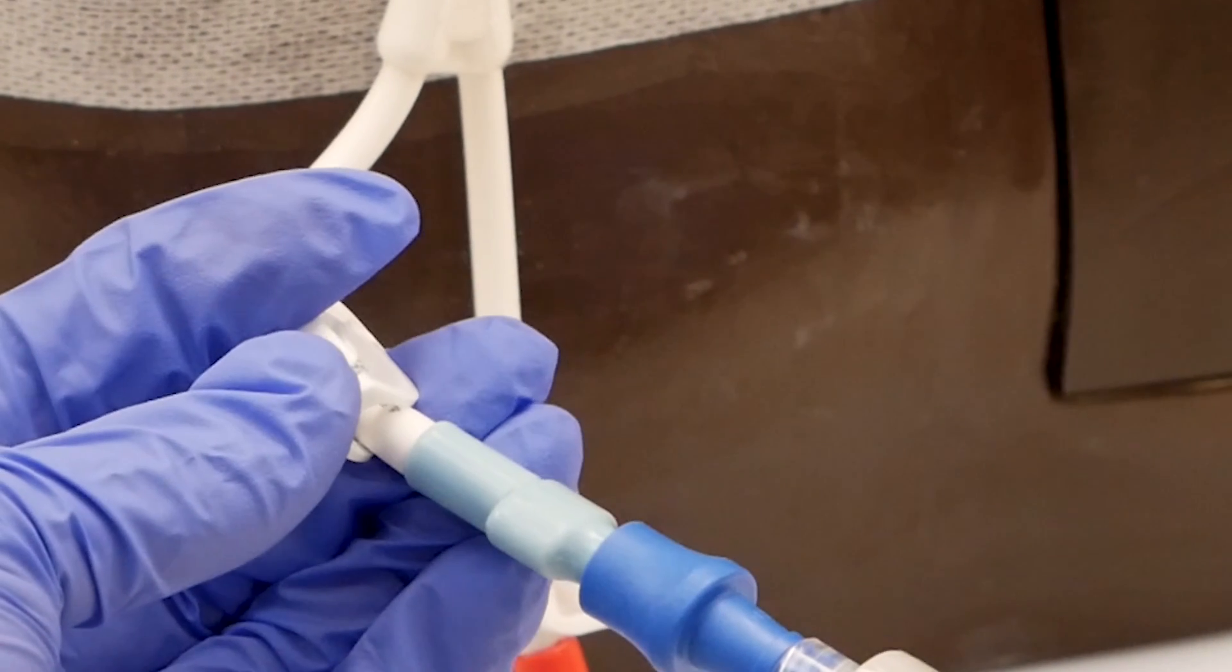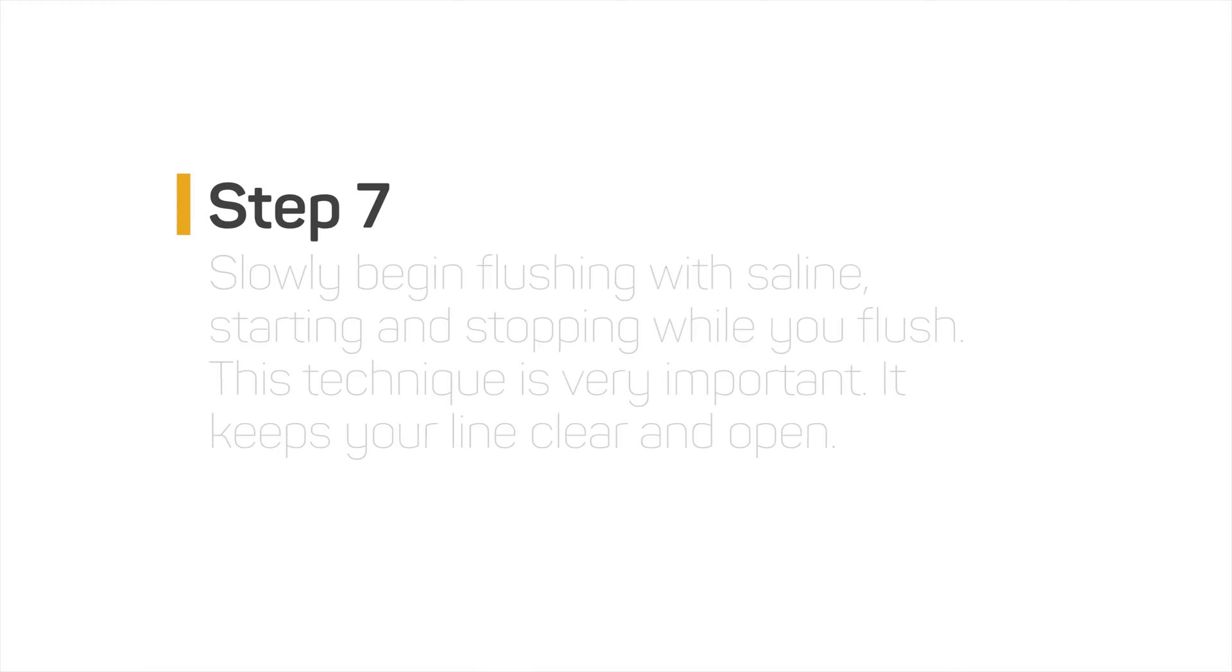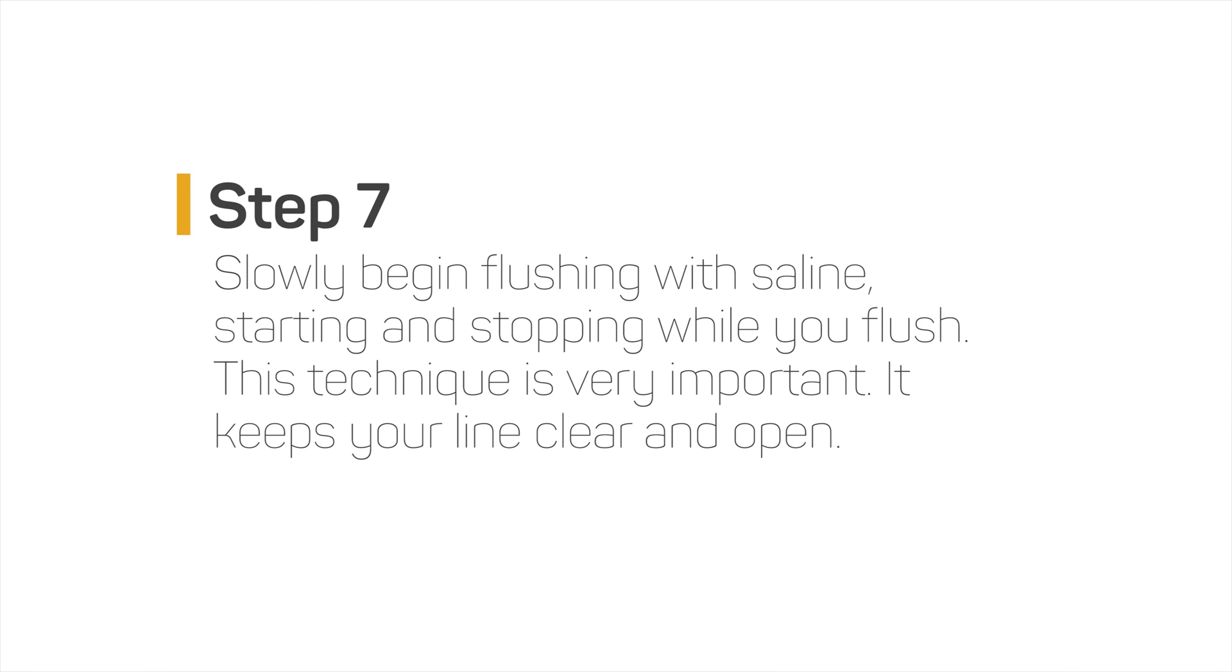Step six: unclamp the central line. Step seven: slowly begin flushing with saline starting and stopping while you flush. This technique is very important. It keeps your line clear and open.